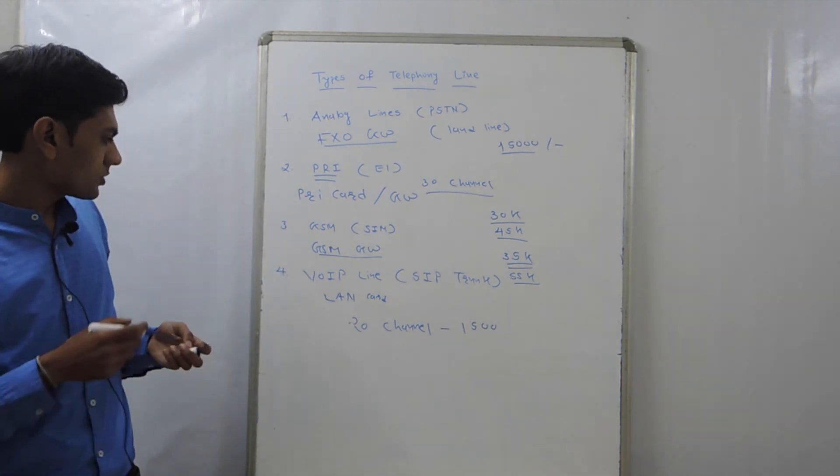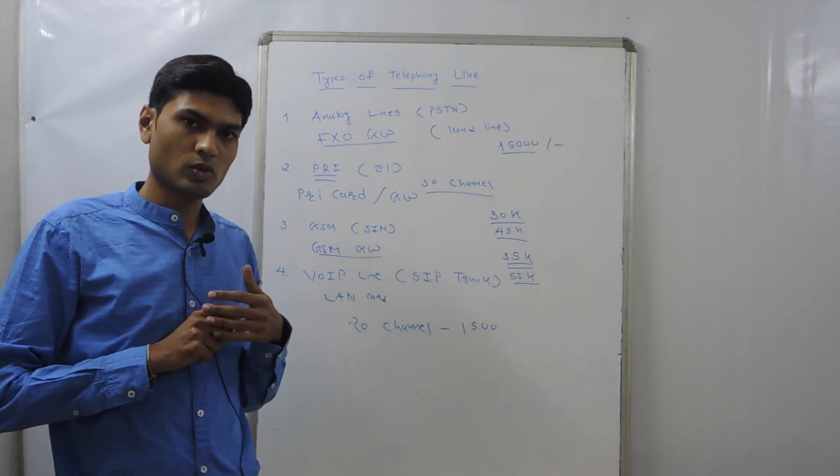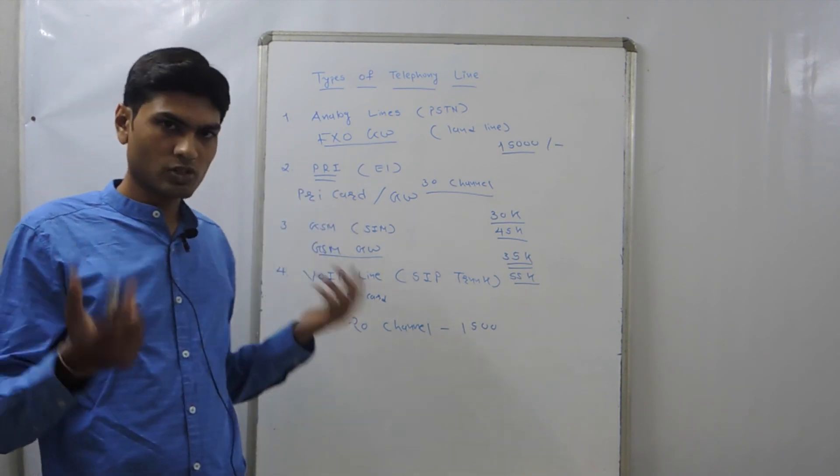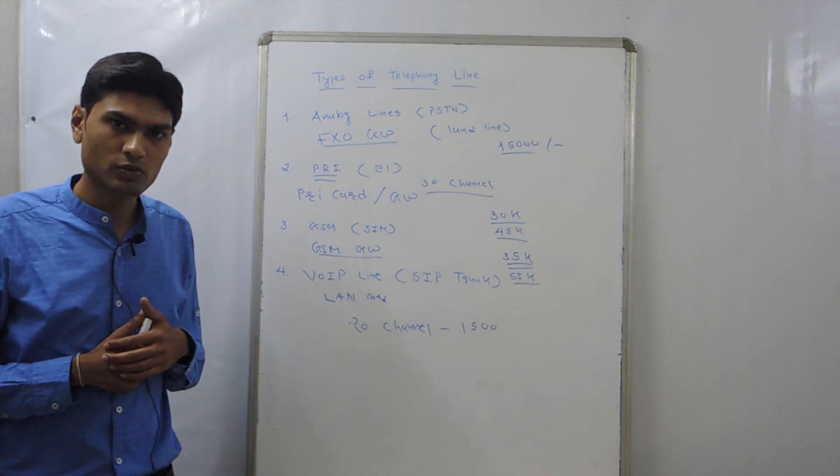So these are the four basic types of telephony lines available in this world, and all are supported in the CNAB server. Thanks for watching this video.